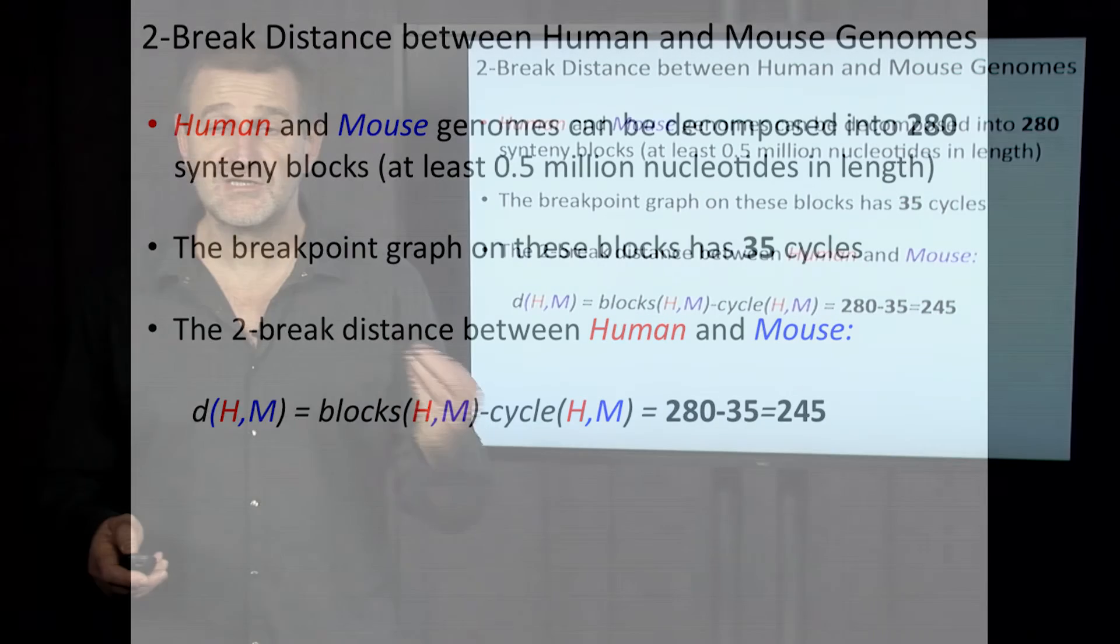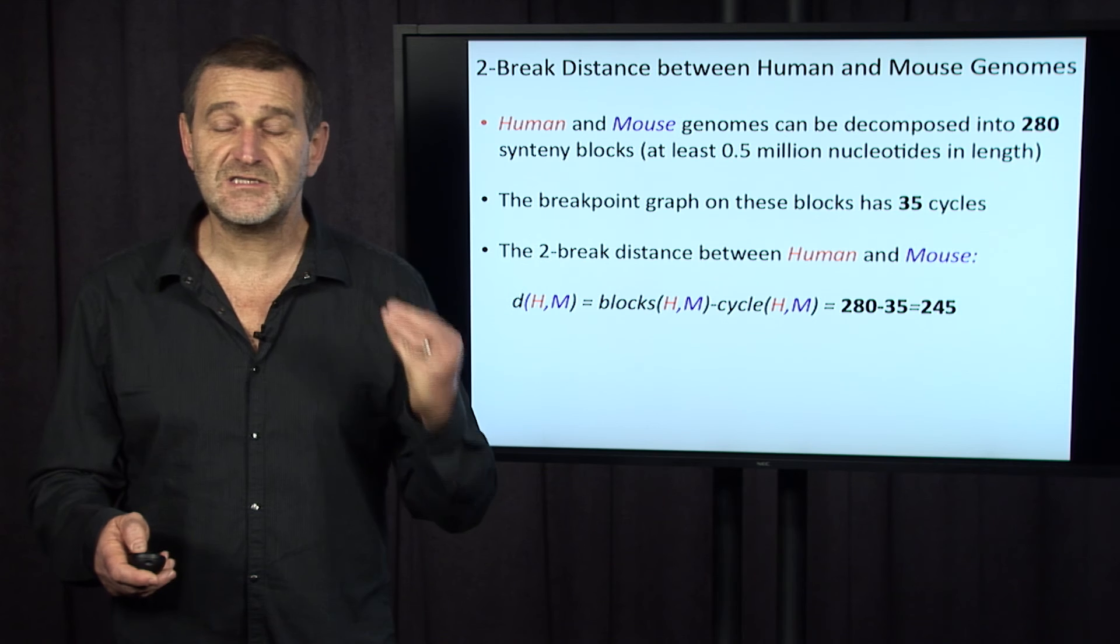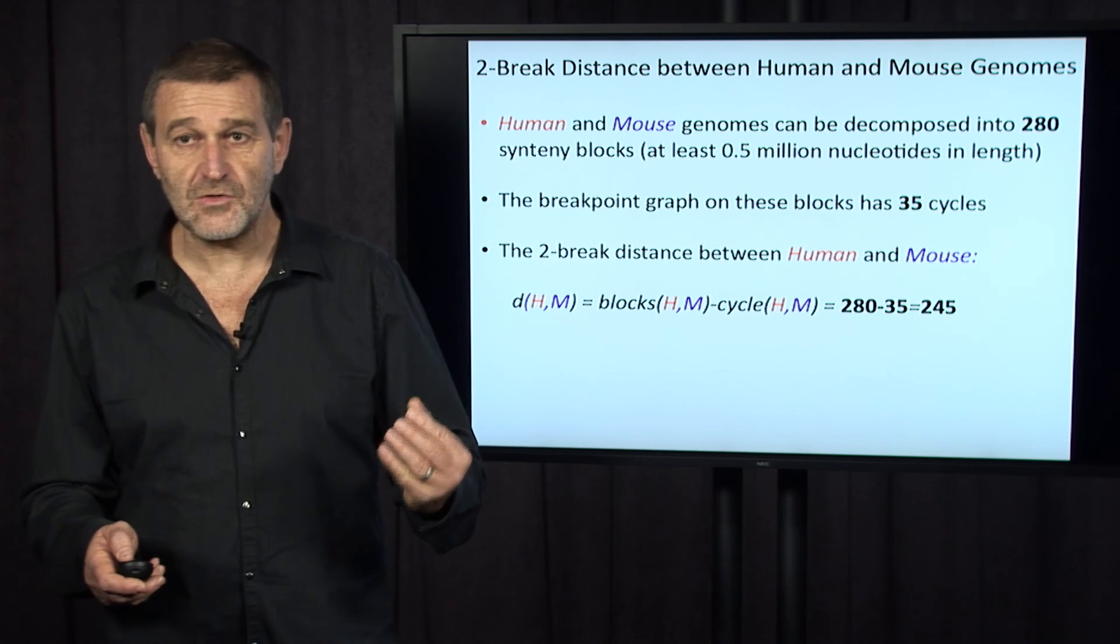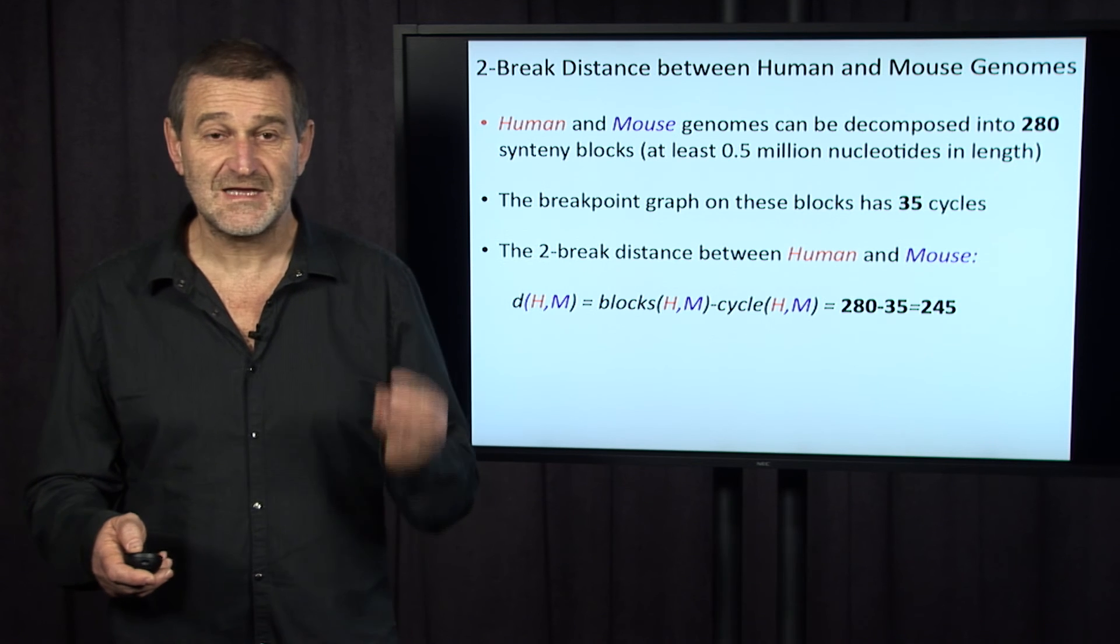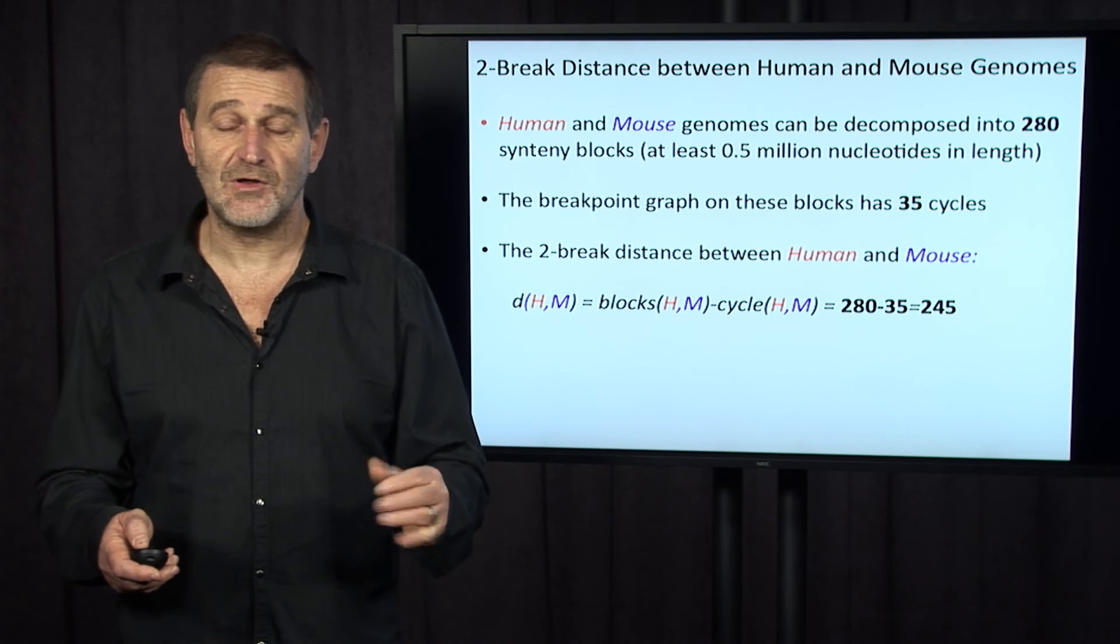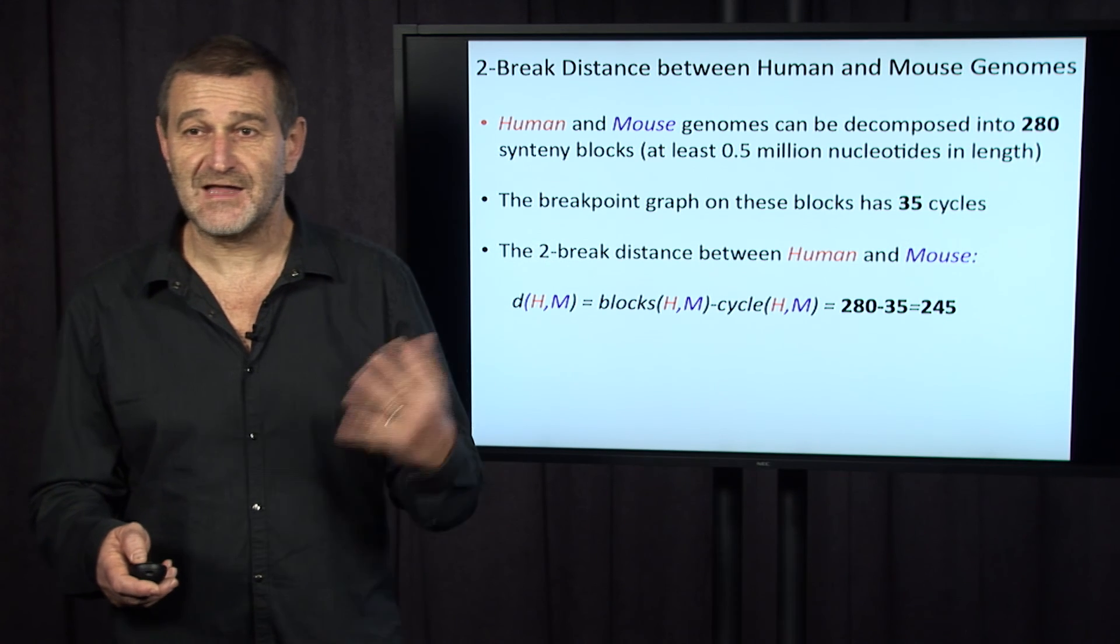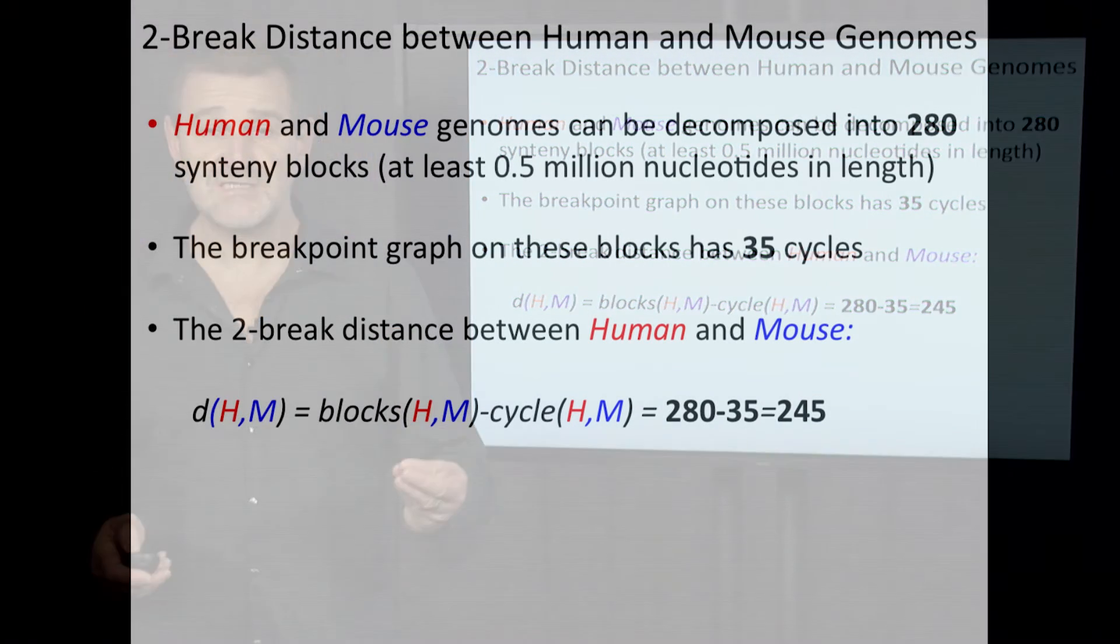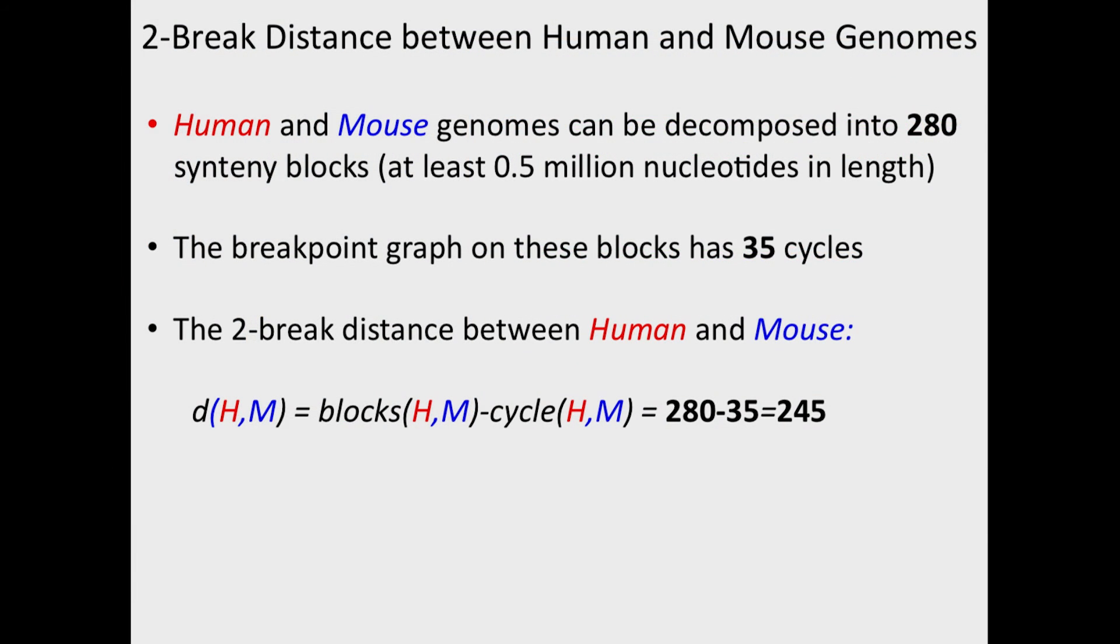And armed with the theorem, we actually can compute the two-break distance between circularized human and mouse chromosomes. We know that human and mouse genomes can be decomposed into 280 synteny blocks. Each of these blocks will be larger than half a million nucleotides in length. The breakpoint graph on these blocks, if we look at this,